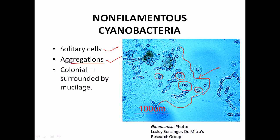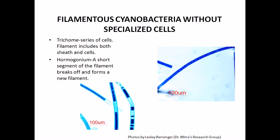Non-filamentous cells can be solitary and sometimes aggregate due to physical forces and Brownian motion. For filamentous cyanobacteria, they are very good-looking bacteria. They can impart blue, red, or green colored compounds. Most of the time they impart green, and they have a trichome — a series of cells arranged in sequence.